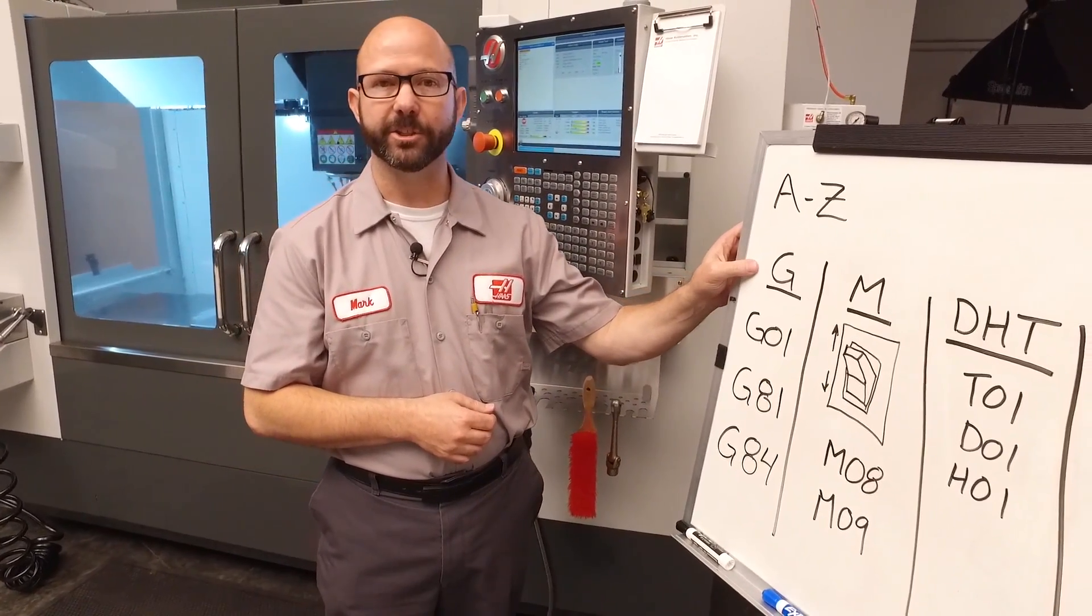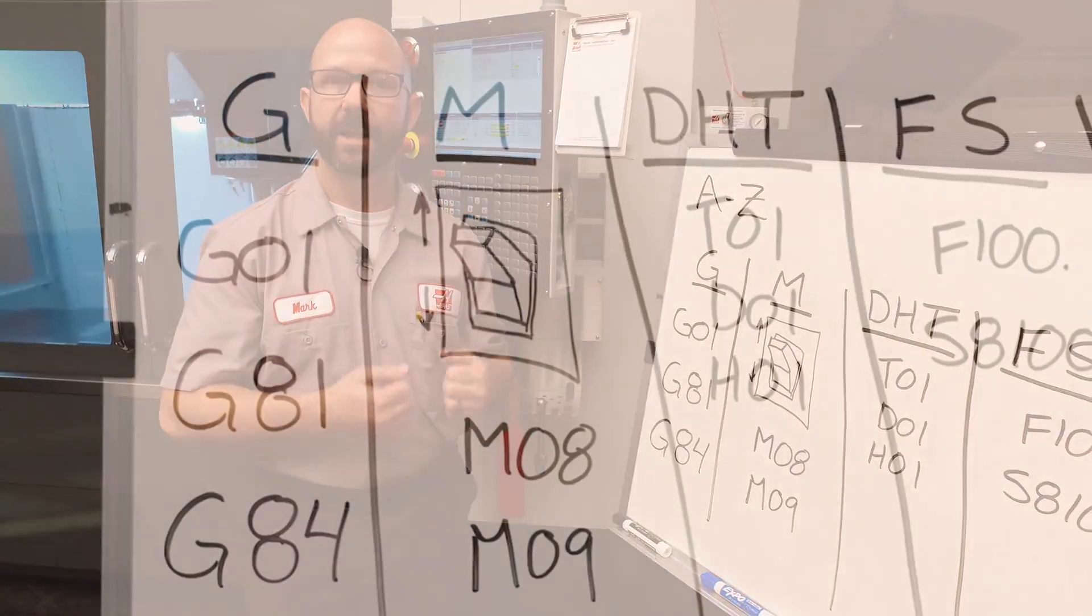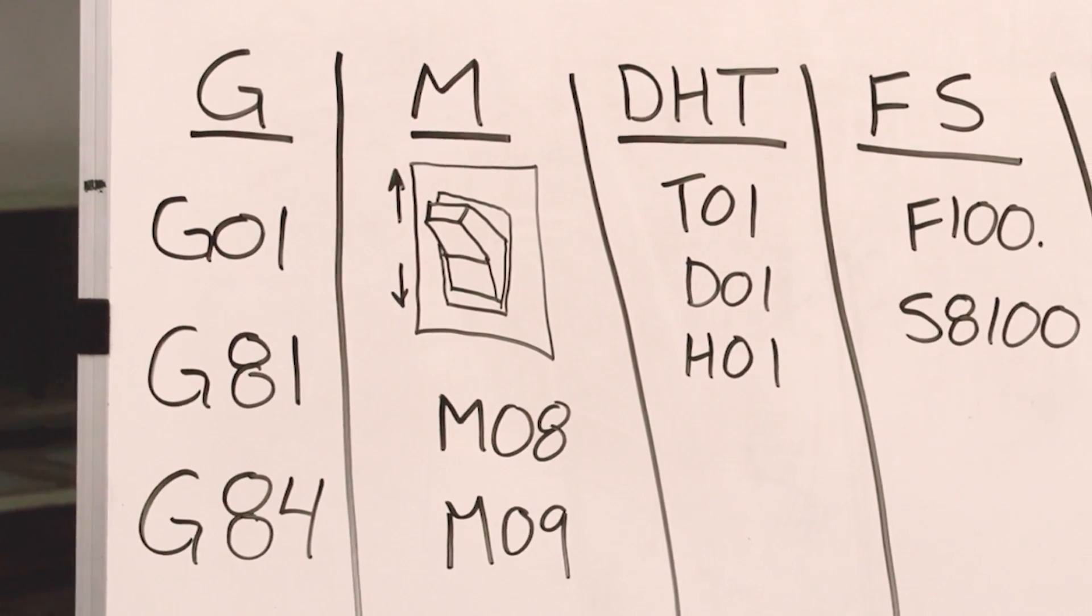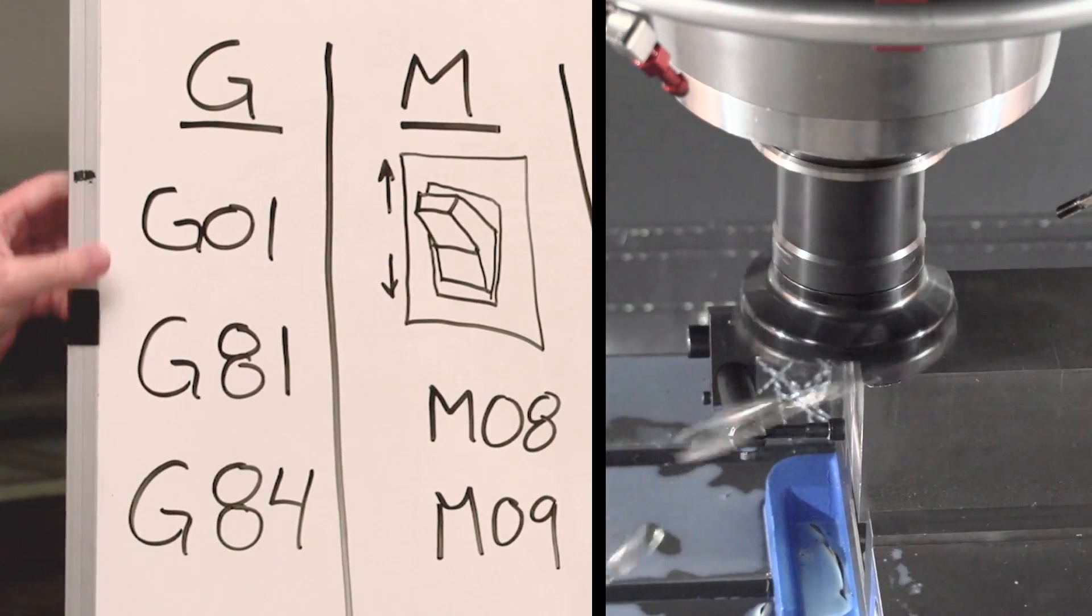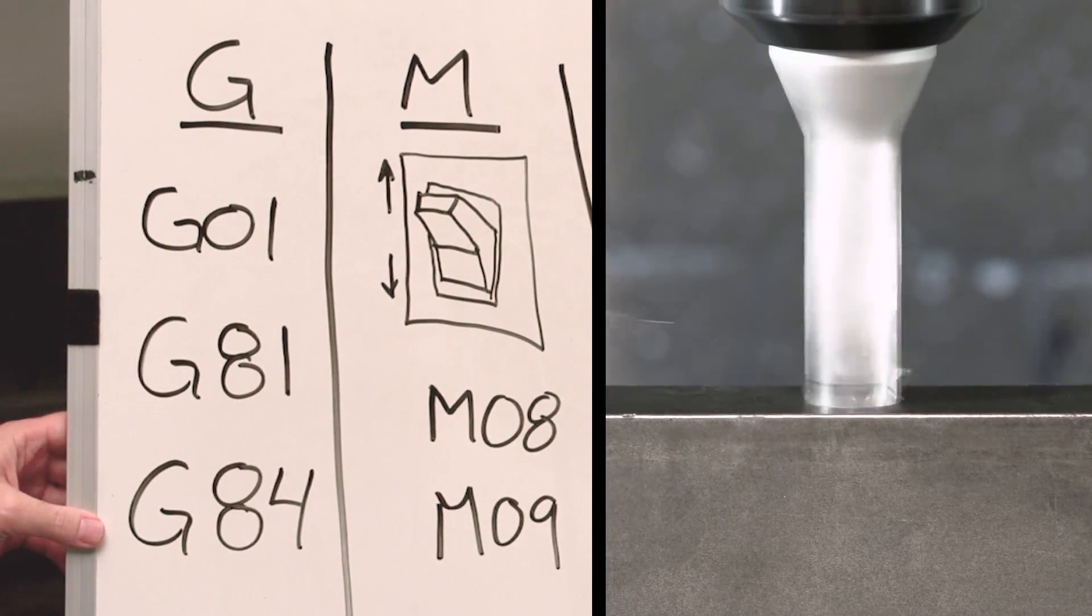Codes that begin with the letter G are preparatory functions. They tell the machine to do some kind of task, like mill a line, drill a hole, or even tap a hole.